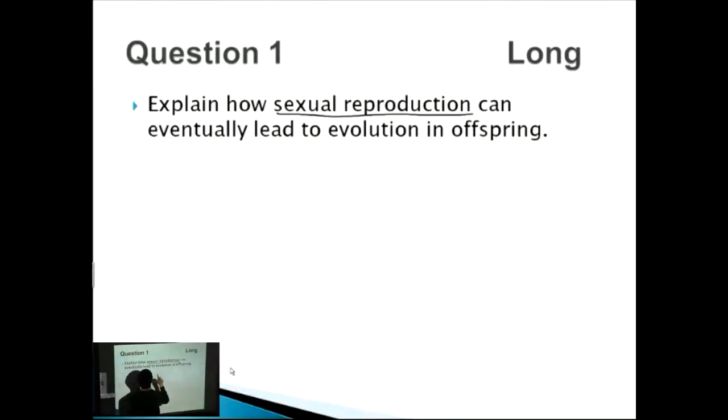Sexual reproduction is one part, as well as evolution in offspring is the other part. The key thing is that we need to know that sexual reproduction leads to variation - that's very important. So we're going to talk about sexual reproduction first.